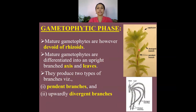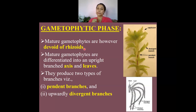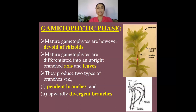The mature gametophytes are devoid of rhizoids. Since the plants are mostly aquatic or semi-aquatic, the function of anchorage is not required. The absorption of water and minerals takes place through the leaves, which is why rhizoids are absent in the mature gametophoric phase of Sphagnum.